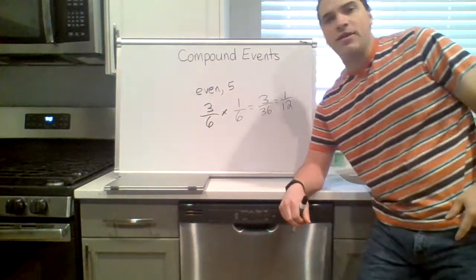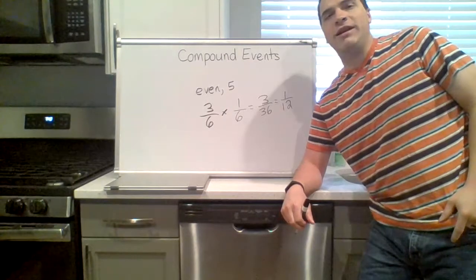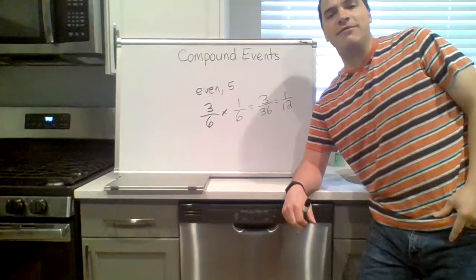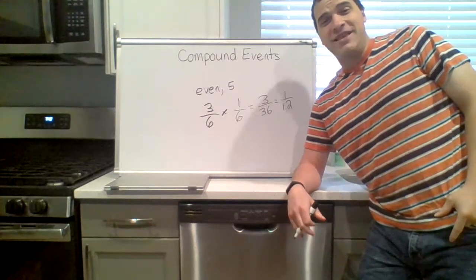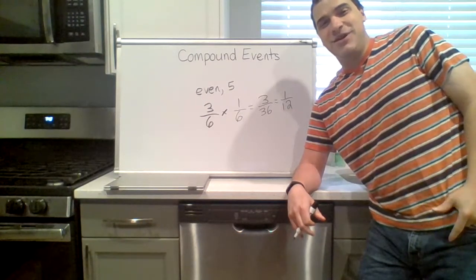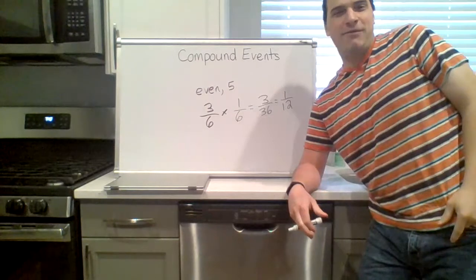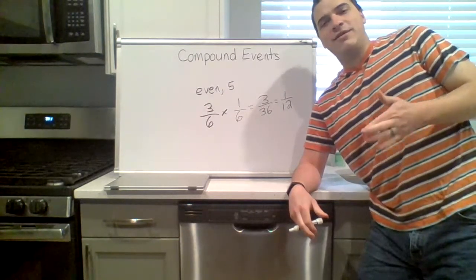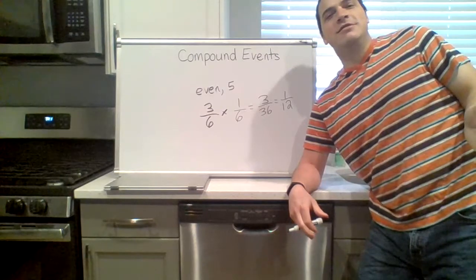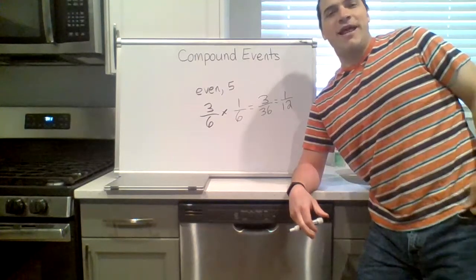Three times one is three, six times six is thirty-six, simplifies to one twelfth. So you have a one in twelve chance of rolling an even number and then a five. One in twelve is about eight percent. Is that likely? No, but will it happen sometimes? Of course. Unlikely events can still happen. It just doesn't mean it's going to happen every time.